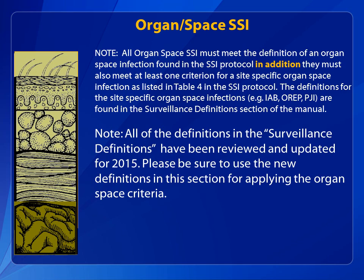As a reminder, when an organ space SSI is evaluated, you must meet one of the criteria for the general organ space definition found in the SSI protocol. In addition, you must meet at least one criterion for a site-specific organ space infection as listed in Table 4. For example, if a CT scan shows what may be an intra-abdominal abscess, the IP must determine if the case meets the definition of an IAB infection, found in Chapter 17. All definitions in the Surveillance Definitions Chapter were reviewed and updated for 2015.